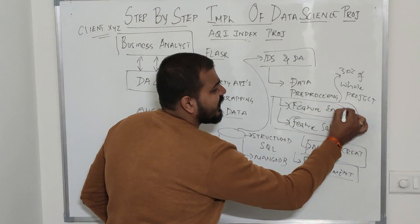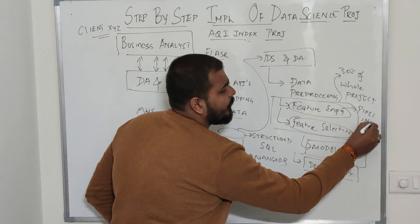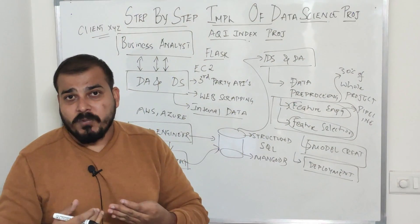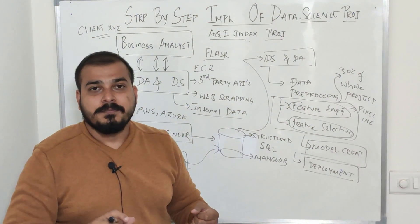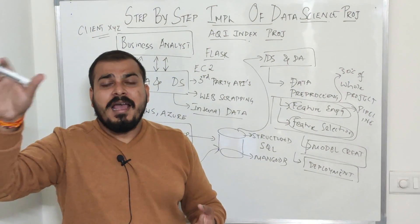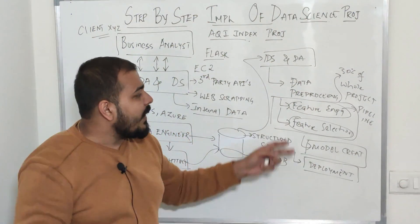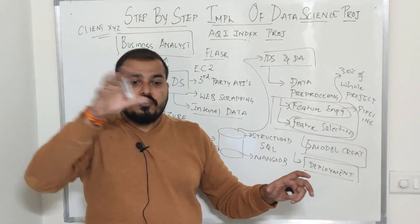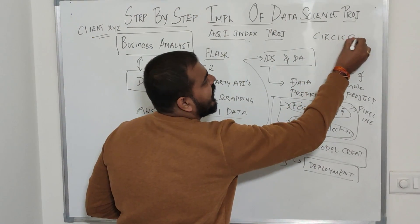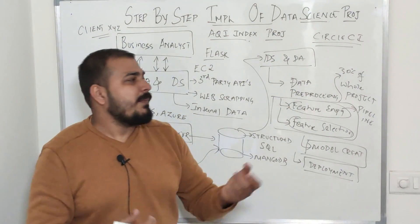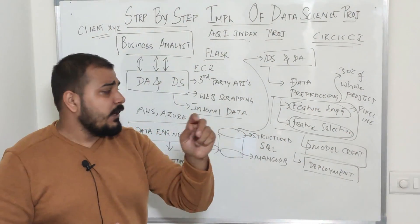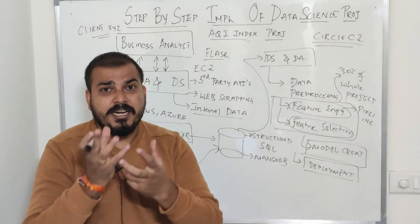The entire process — feature engineering, feature selection, model training — is created as a pipeline. All the code is stored in repositories with version control, so that when new code is committed, deployment happens automatically. A great tool for this is Circle CI, which lets you create pipelines, commit code, and with one click create a Docker container and deploy automatically.